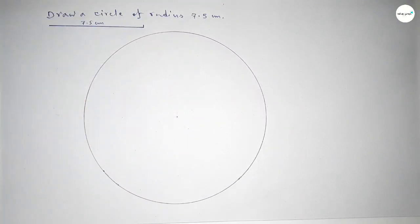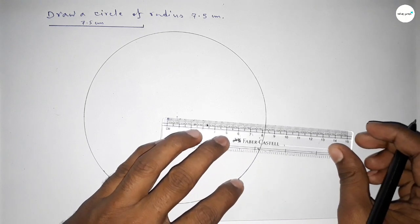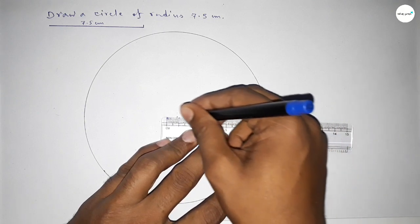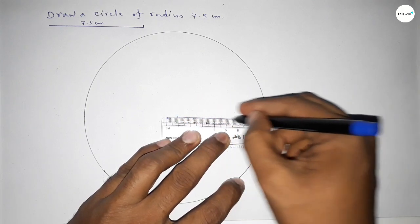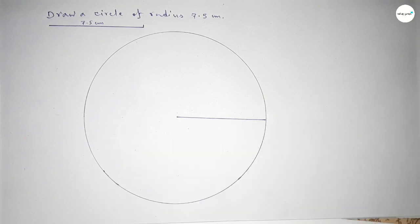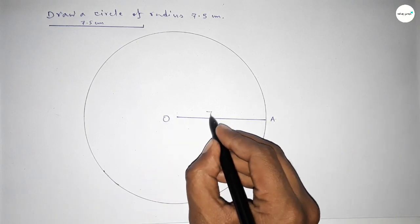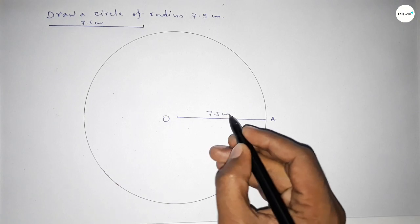Now joining this one, which is the radius of this circle. So now joining this and taking here the center of the circle is O and here A. So OA equal to 7.5 centimeter.